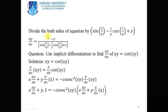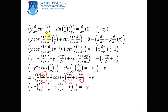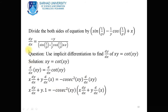Dividing both sides by [sin(1/y) − (1/y)·cos(1/y) + x], we obtain dy/dx = −y / [sin(1/y) − (1/y)·cos(1/y) + x].